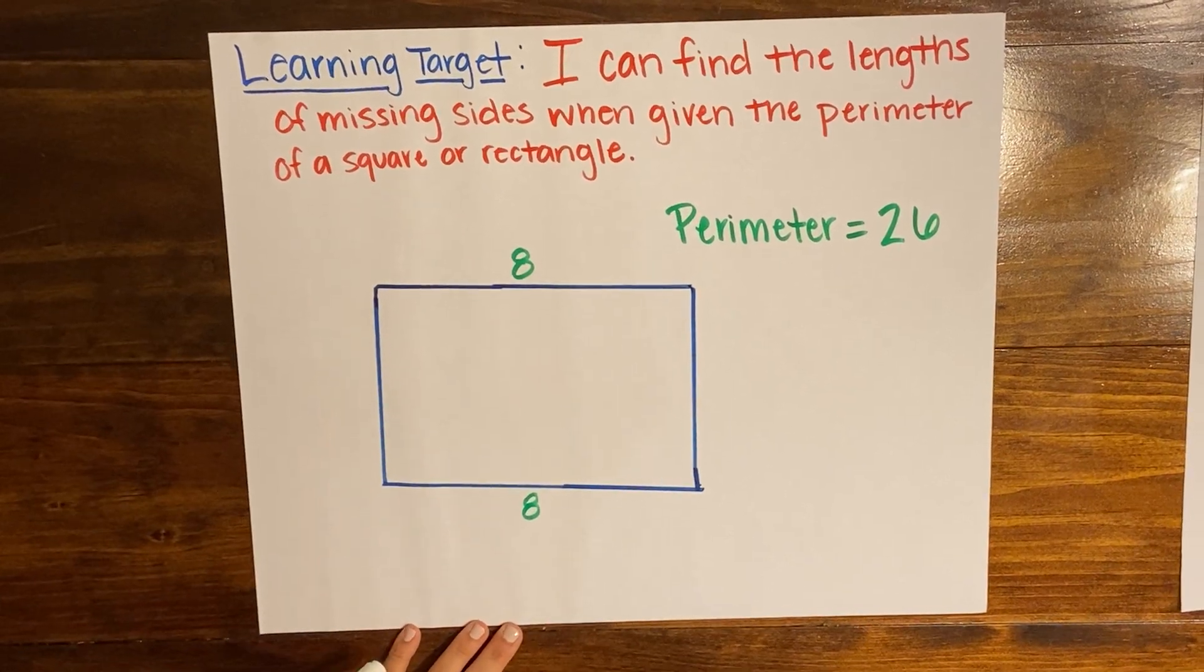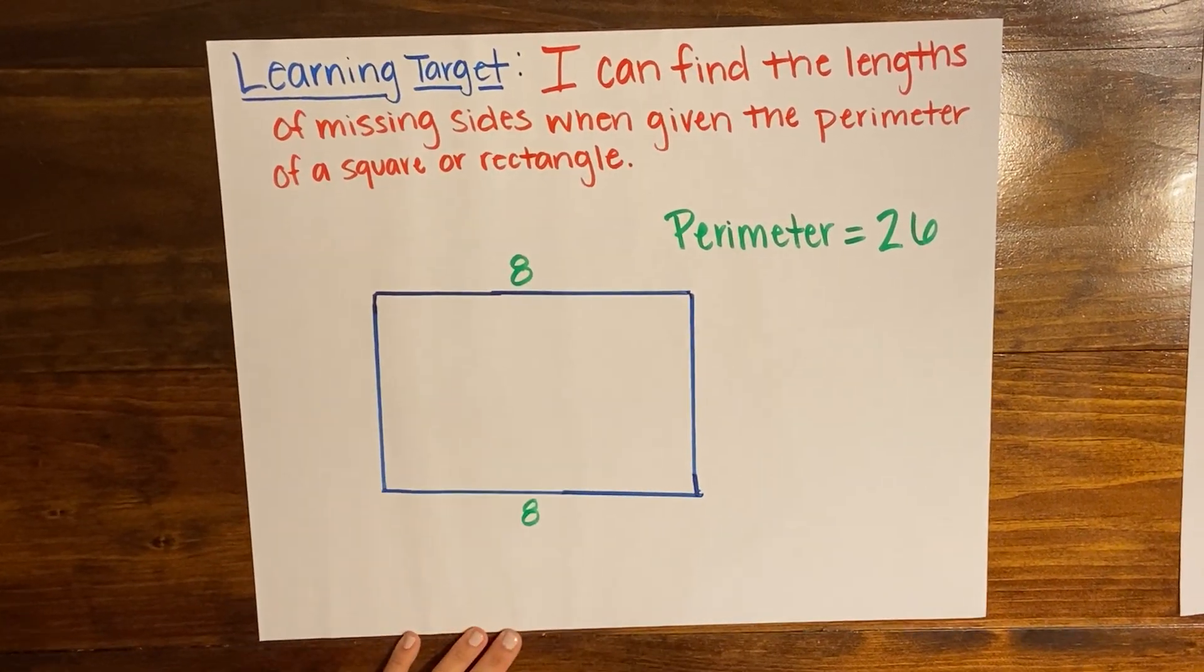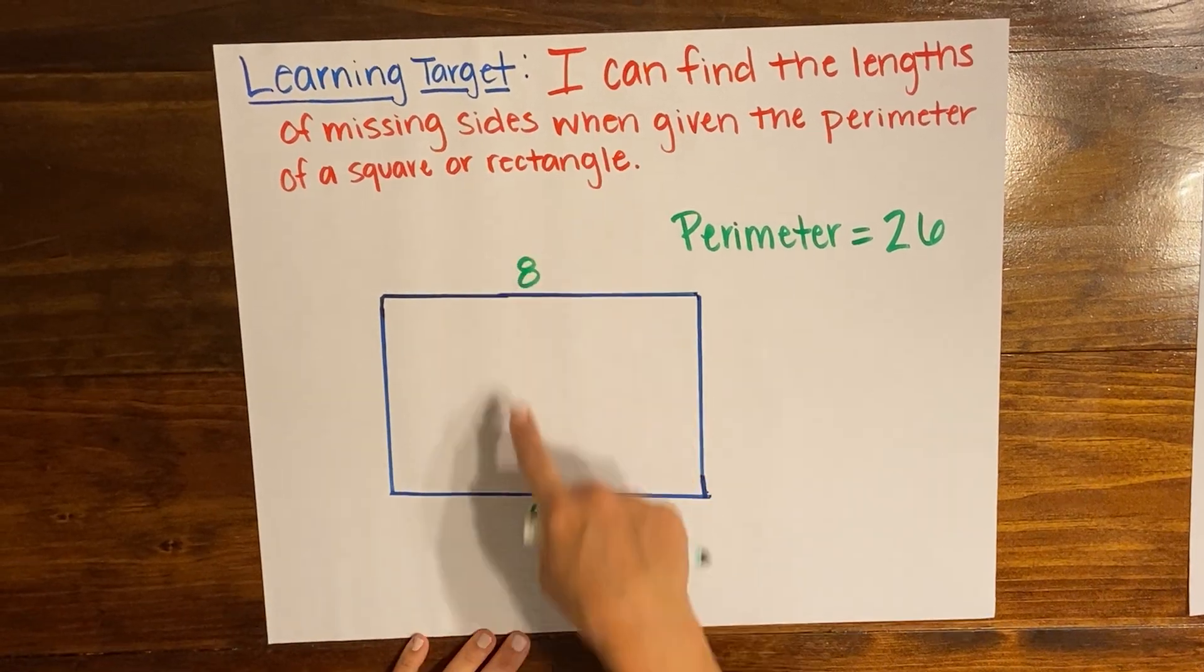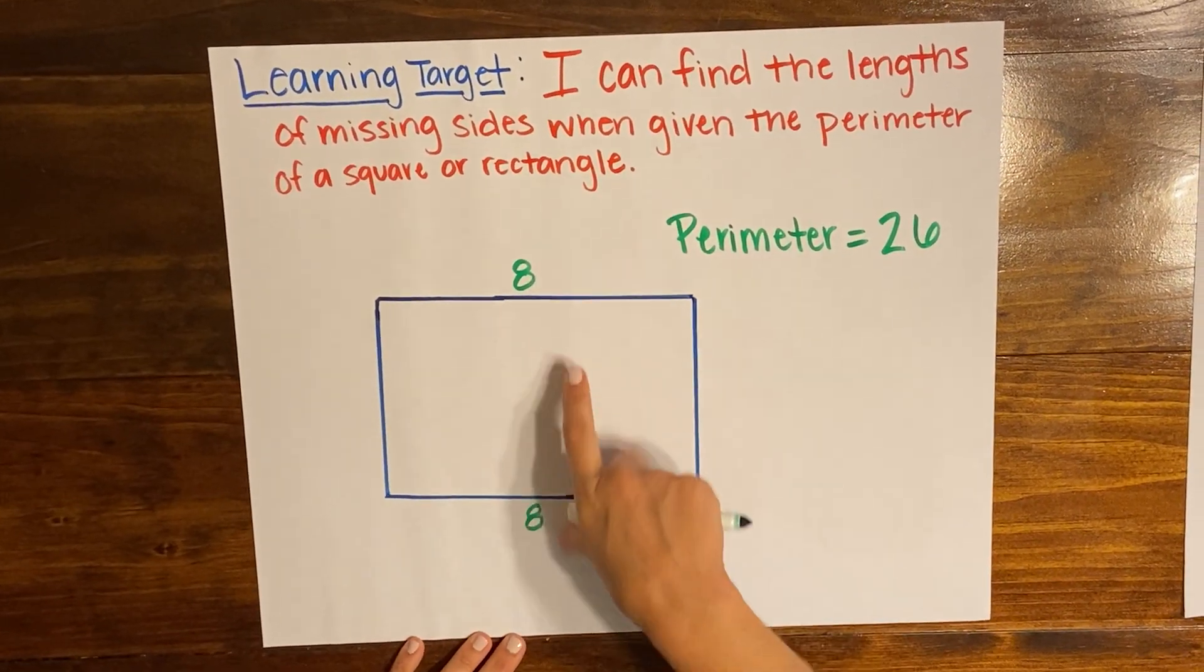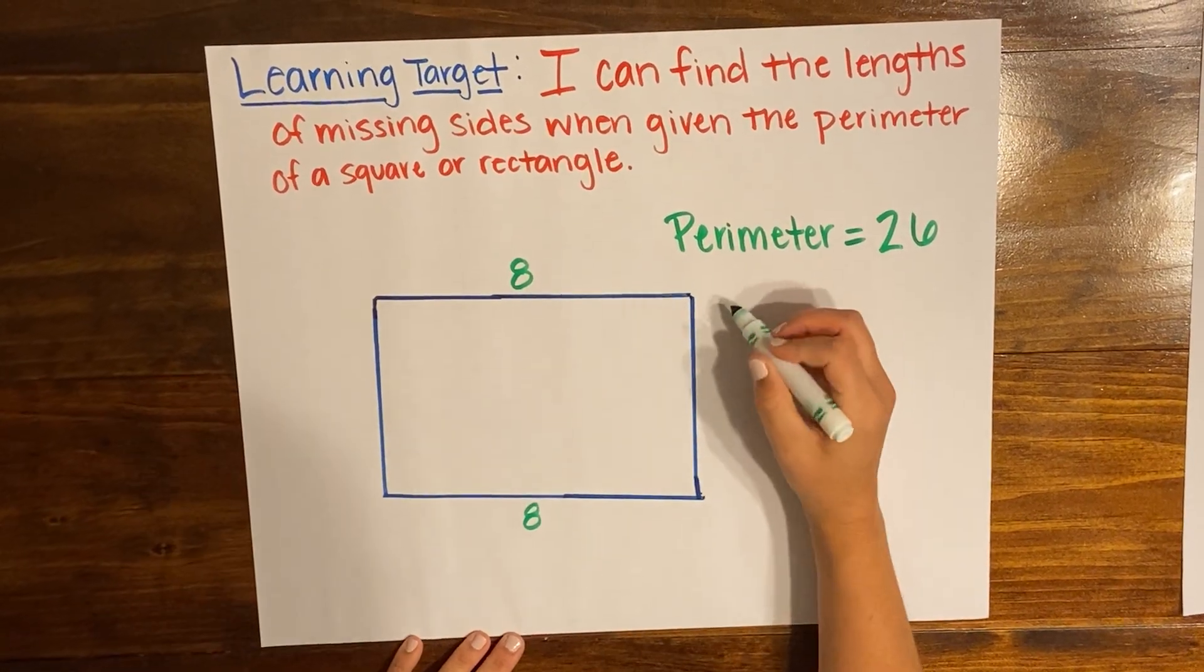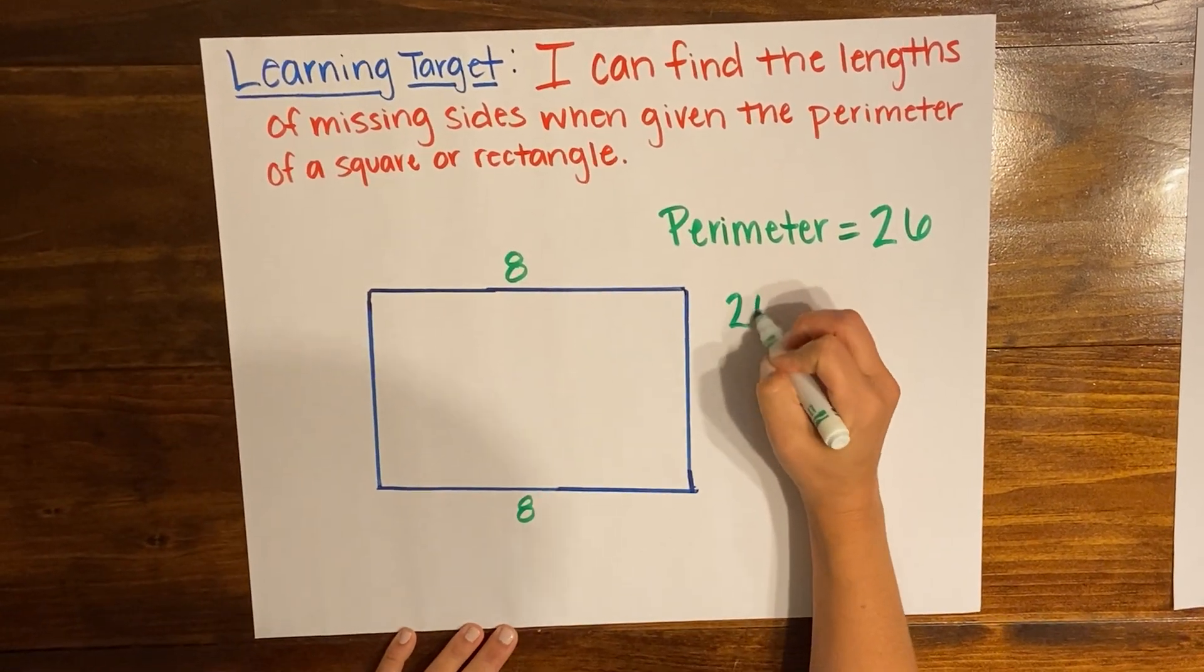So what I'm gonna do is I know that all of the sides added together are 26 and I know that I have two sides that are worth 8. And this is an easy doubles fact: 8 plus 8 is 16. So I'm gonna go ahead and just subtract that from my 26.